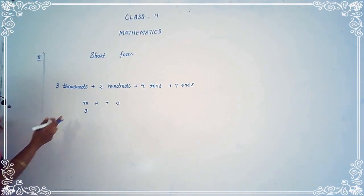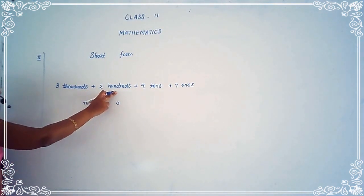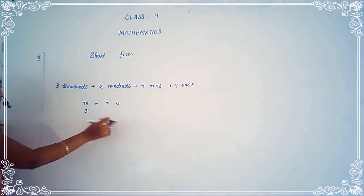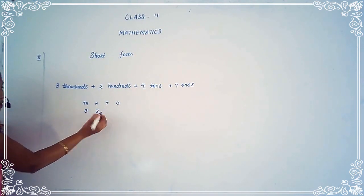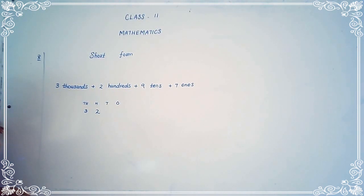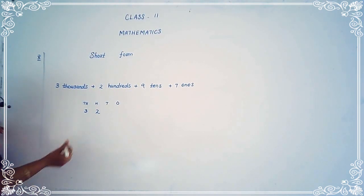Then see the second one — two hundredths. How many hundredths is here? Two hundred. So we have to write two in the hundredths place. Then see the tenths place. How many tenths is there? Nine tenths. So we have to write nine in the tenths place.